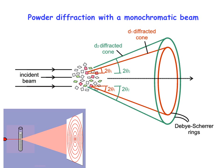The incident beam scattered by many crystallites in different directions gives diffraction cones. These successive diffraction cones produce what are called Debye-Scherrer rings in the detector. Each ring corresponds to a different 2θ angle and thus to a different d-spacing in the crystal. This method is very fast, does not require any orientation of the powder — you can simply place the sample in front of the beam and count for some time to collect enough photons.